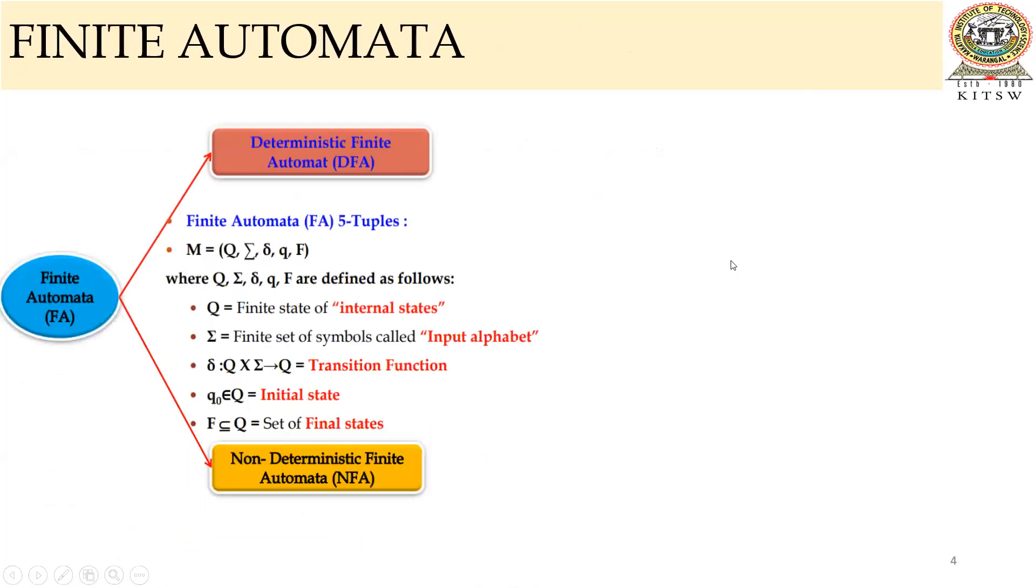Before going to that, we already discussed what is finite automata in the previous classes. Finite automata is of two types: deterministic finite automata and non-deterministic finite automata. Generally, finite automata is a five-tuple, and we already discussed this.